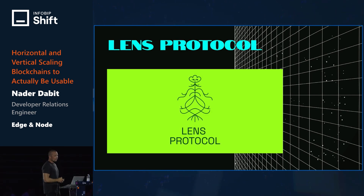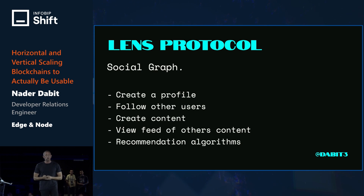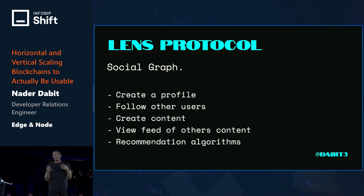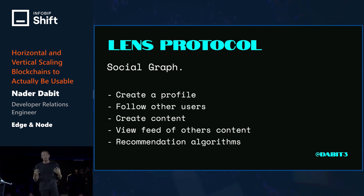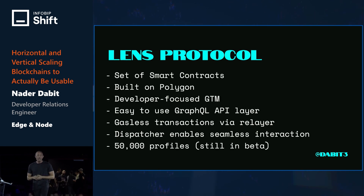Another good example is Lens Protocol — a composable and decentralized social graph. A social graph allows you to create a profile, follow users, see a feed of content from people you're following, post content, and interact with recommendation algorithms — think TikTok, YouTube, Facebook. Lens is a set of smart contracts that have functions you'd typically expect in a regular smart contract.